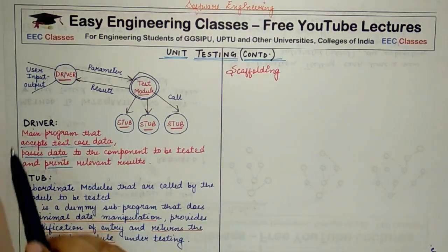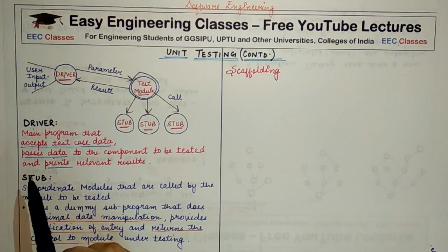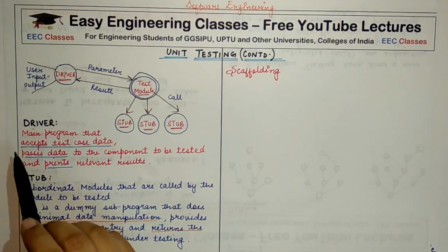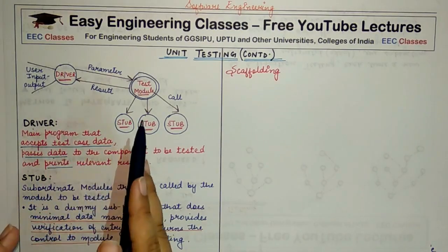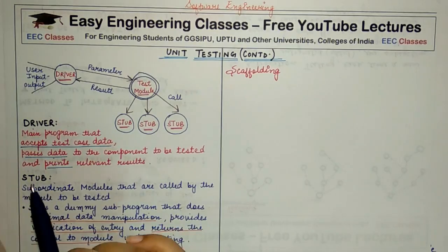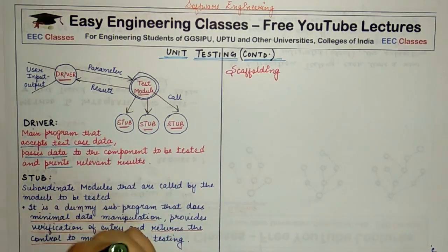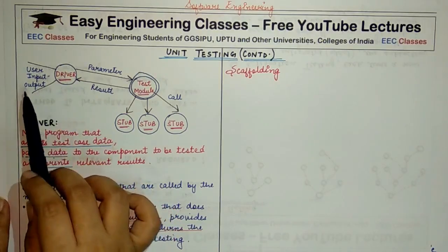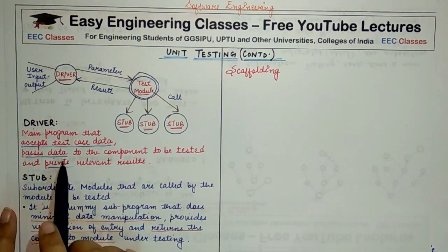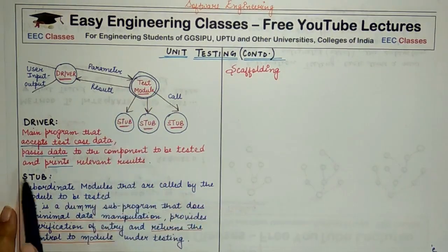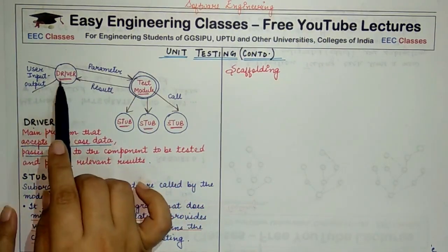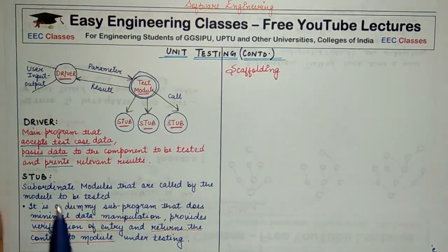Let's look at the definitions of both and see what three main functions driver and stub have during unit testing. A driver is a main program — by main program here, what I mean is that it is the module, the main module, that is calling the test module. It may not coincide with the 'main' that we refer to in C++ or other such languages, but it is the program or module that accepts the test case data, as shown here. The driver accepts some input from the user and passes the data to the component to be tested, which is our test module, and then prints the relevant result.